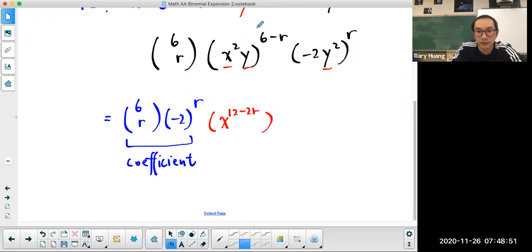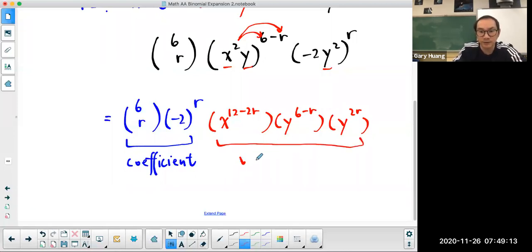This should be the block: 2 times 6, 2 times r. y is going to be raised to the power of 6 minus r. What about this part? This part is y raised to the power of 2r. So all those combined together would be your variable.